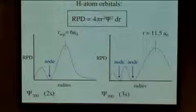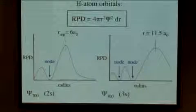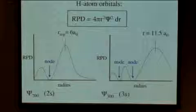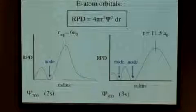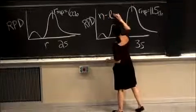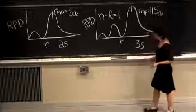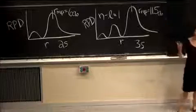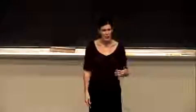I'm glad to hear that no one counted this r equals zero as a node. So we expect to see two nodes right here in the 3s orbital, and we can calculate that with the formula that we used, which was just n minus l minus 1 equals the number of nodes. Or we could just look at the radial probability distribution itself and see how many nodes there are.